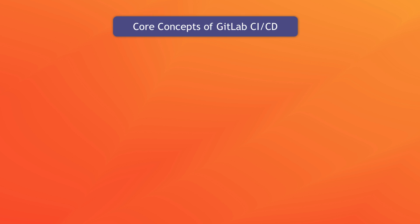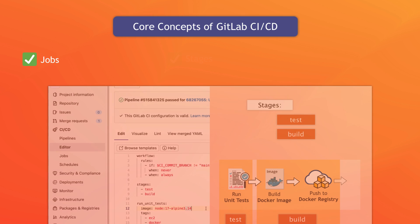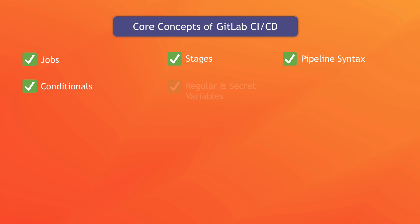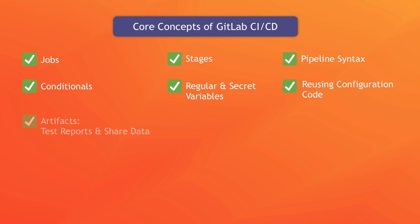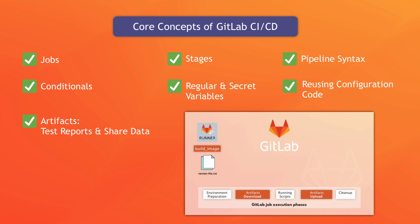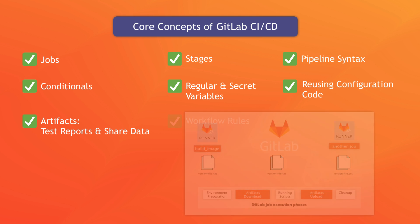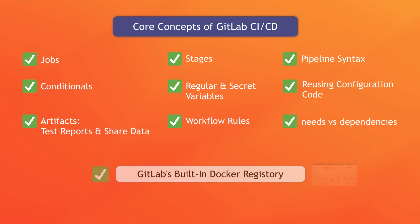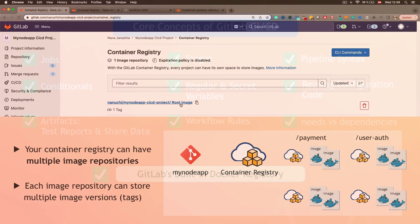We will look at different ways of operating GitLab and see managed versus self-managed GitLab platform. Once we have the infrastructure set up, we will move on to learn the core concepts of GitLab CI/CD, like jobs, stages, the pipeline syntax in general, how to use conditionals, regular and secret variables, and reusing configuration code to avoid duplication. We will learn the concept of artifacts and how to generate test reports, as well as share data within the pipeline using the artifacts. We will see how workflow rules can be used to define when the pipelines should be triggered, and we will also learn about GitLab's built-in Docker registry and how to use it in the pipeline.